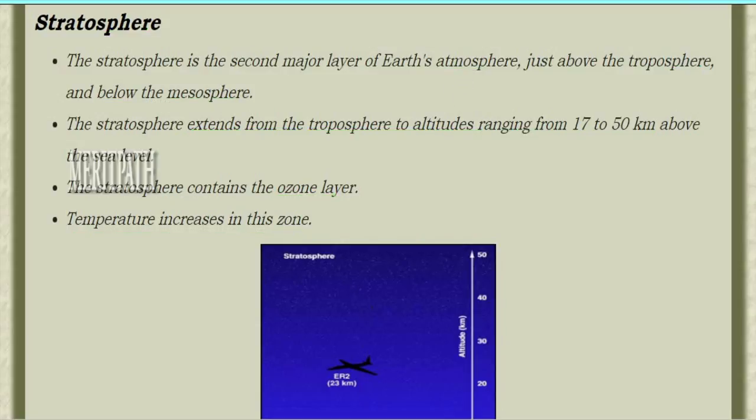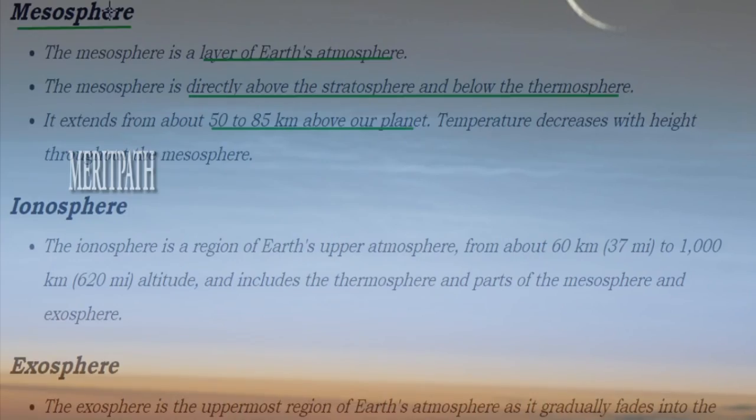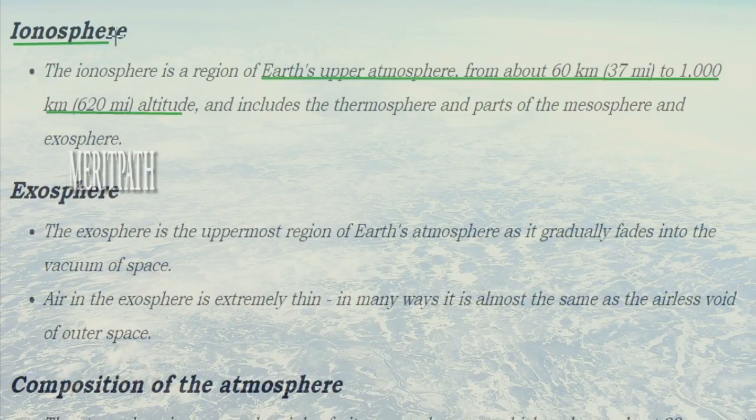The mesosphere is directly above the stratosphere and below the thermosphere. It extends from 50 to 85 kilometers above Earth's surface. As altitude increases, temperature decreases, so the mesosphere is always colder.